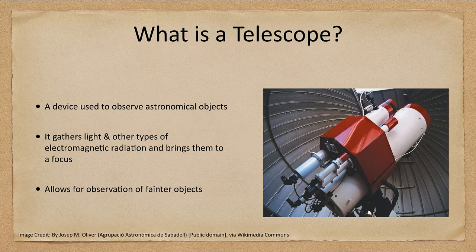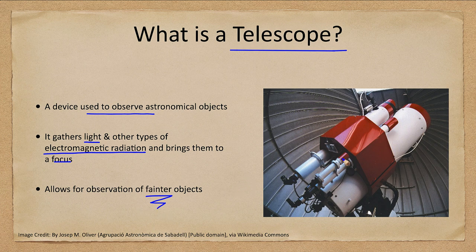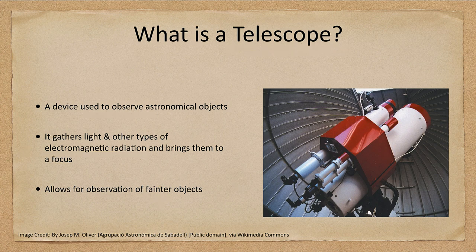So what is an optical telescope? Well, let's go back even earlier — what is a telescope? It is just a device that is used to observe astronomical objects. It gathers light, which can be any type of electromagnetic radiation, and brings that light to a focus. It allows us to see fainter objects than would otherwise be visible. We see here actually multiple telescopes — one main lens and other smaller scopes attached to it, all pointing in the same direction in the sky.